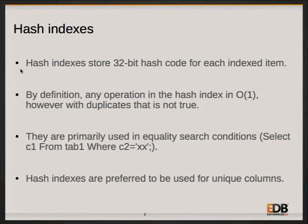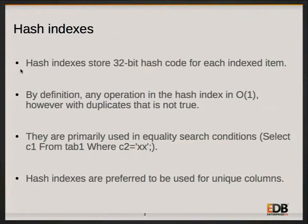Unlike other indexes, hash indexes store the 32-bit hash code of each index item, which helps in reducing the size. For example, if the hash index is on a varchar column or some large value column, it stores only the 32-bit hash code for it. By definition, any operation on a hash index is O(1). However, with duplicates that is not completely true. They are primarily used in equality search conditions and are preferred when the data in the index is unique.